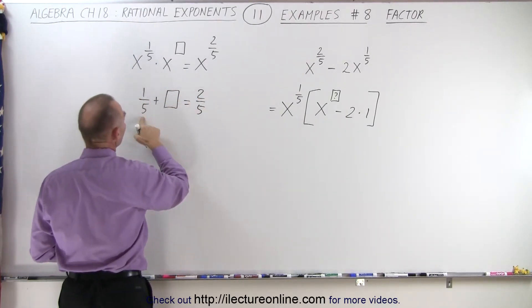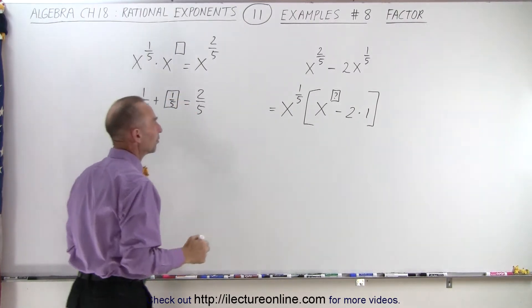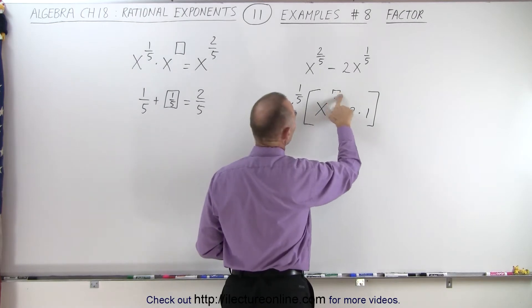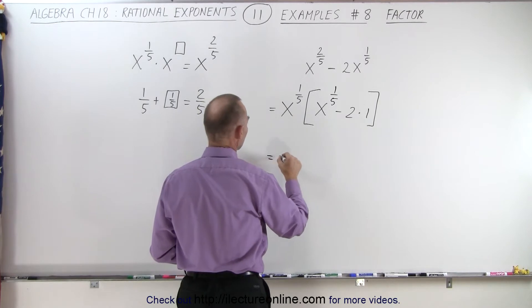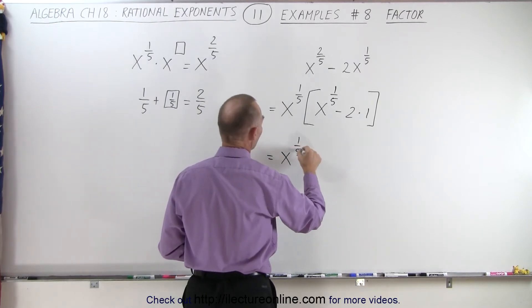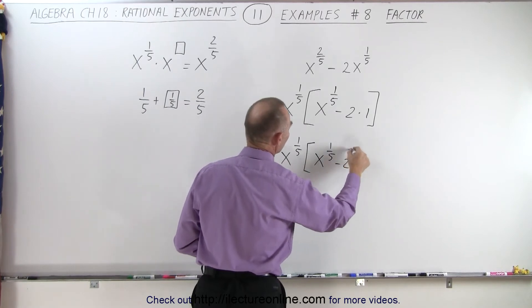And it's clear that 1 fifth plus 1 fifth gives us 2 fifths. So the new exponent in here must be 1 fifth. So this is now going to be replaced by 1 fifth. And so therefore, this is equal to x to the 1 fifth multiplied times x to the 1 fifth minus 2.